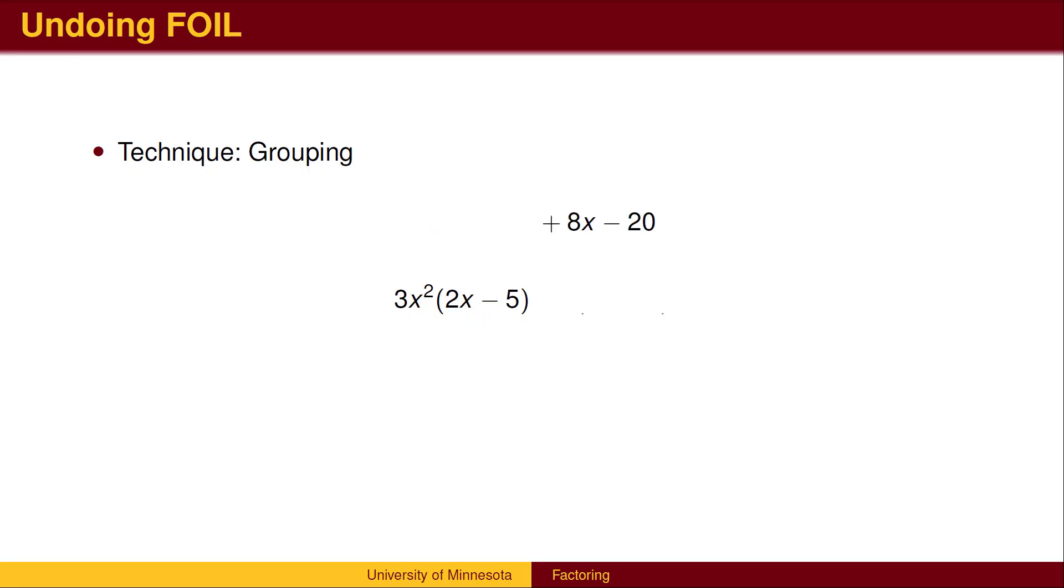We repeat this process for the second half. 8x and 20 each have a factor of 4. We factor out the 4 and see that the remaining factor is 2x minus 5. We now have a common factor of 2x minus 5, which we factor out. Here is the final factorization.